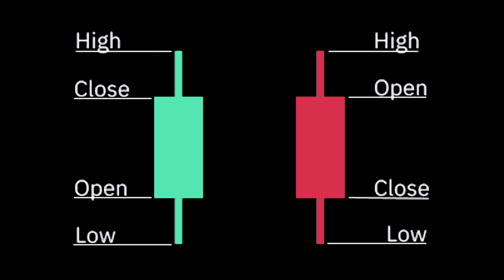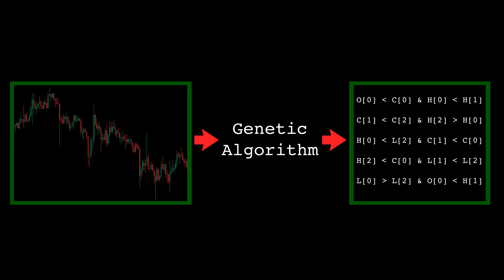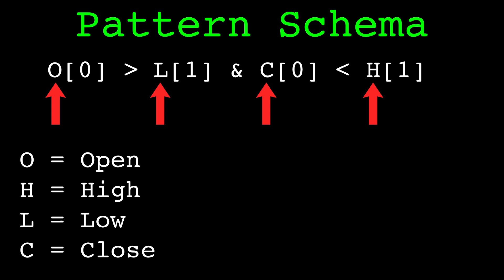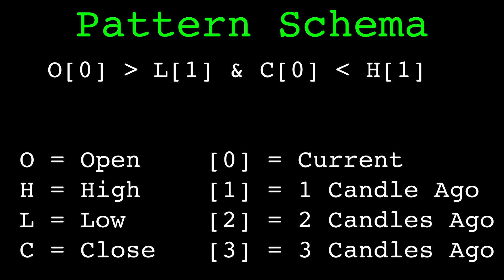The genetic algorithm is given a collection of candlestick data as input. It has to define the schema for the patterns we seek to optimize. Here is an example pattern. The letters denote the series — open, high, low, and close. The number denotes the lag: 0 means the current candle, 1 means the previous candle, 2 is two candles ago, and so on. This pattern in English reads as the current candle's open is greater than the prior candle's low, and the current candle's close is less than the prior candle's high.